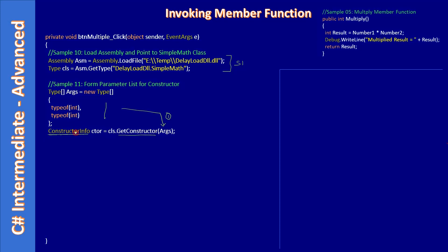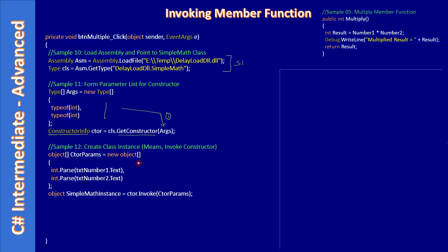ConstructorInfo, just like MethodInfo from the last video, is exposed via System.Reflection — that's why we included that namespace previously. Now we have a ConstructorInfo. After that, for the constructor we need to pass the object array of values. So in sequence: we retrieve the constructor, then we supply the argument values for the constructor.